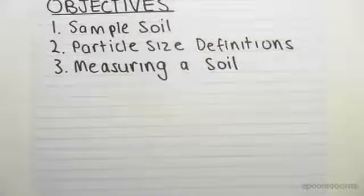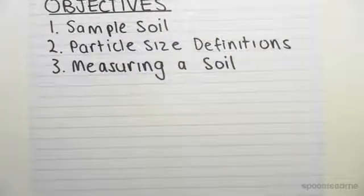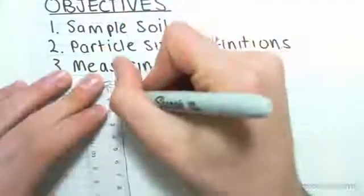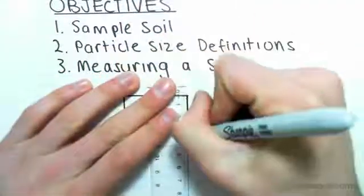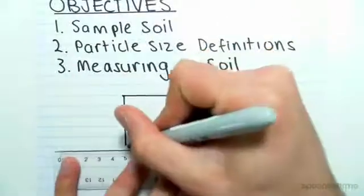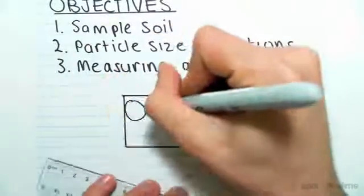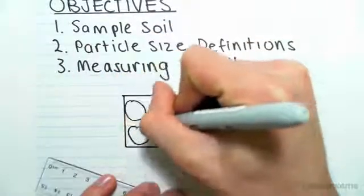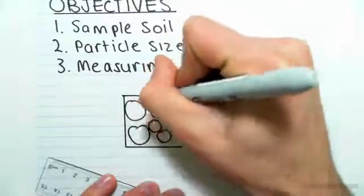So first things first, what is a soil? A soil, if we took a sample from the ground, is going to have all different particles, all different sizes, and probably all different chemical compositions.